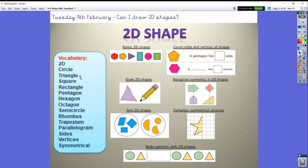Let's go through the vocabulary. Maybe you can join in with saying these words with me: 2D, circle, triangle, square, rectangle, pentagon, hexagon, octagon, semicircle, rhombus, trapezium, parallelogram, sides, vertices, symmetrical.